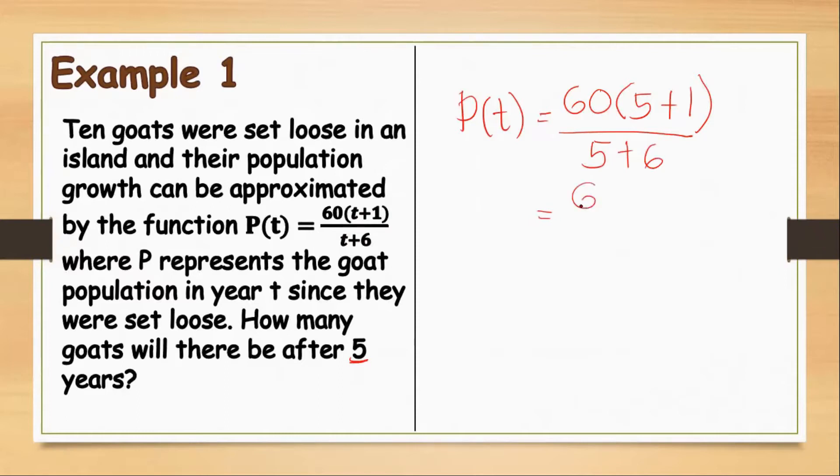So if we are going to solve that, we will have 60 times (5 plus 1 is 6), all over (5 plus 6 is 11). 60 times 6, that is 360, all over 11. And so our P(T) is equal to 32.73. Or since there are no number of goats having decimal point, we have 32 goats. Those 32 goats were the population of the goats after 5 years after they were set loose.